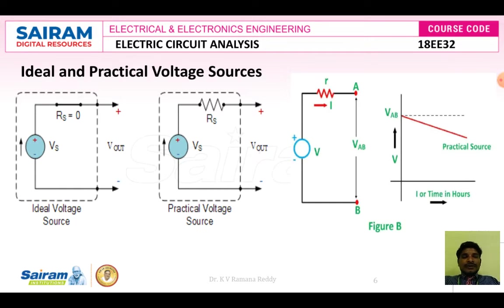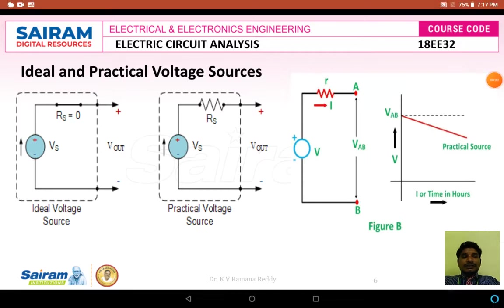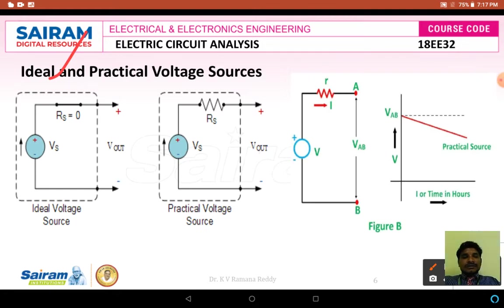First of all, the word 'ideal' is used generally only for theoretical purposes, not for practical purposes. As you know, we have sources of two types: one is ideal voltage source or ideal current source, and the other is practical voltage source or practical current source.